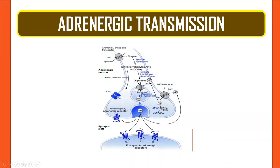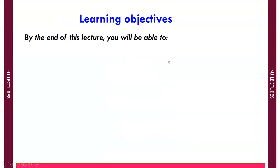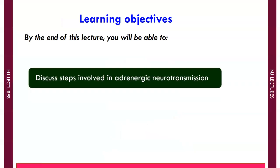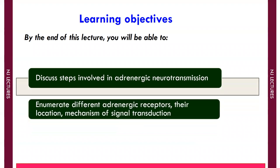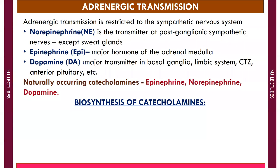Welcome everyone. Today's lecture is on adrenergic transmission. Learning objective: by the end of this lecture, you will be able to discuss steps involved in adrenergic neurotransmission and enumerate different adrenergic receptors, their location, and mechanism of signal transduction.